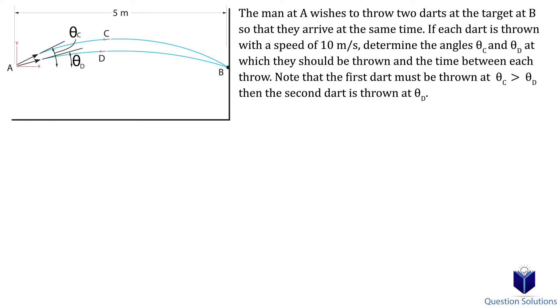In this problem, a person throws two darts at one location with the same speed. We need to figure out the two angles it can be thrown at, and the time between the two throws, so that both of them hit the location at the same time.